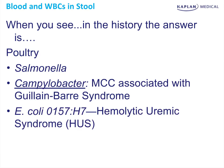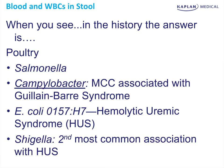E. coli O157:H7 — when you see hemolytic uremic syndrome, don't expect them to always say 'hemolytic uremic.' They'll probably describe it: fragmented cells, low platelets, and a high BUN and creatinine. The answer is most likely hemolytic uremic syndrome. The second most common organism associated with HUS is Shigella — Shiga toxin causes it too.